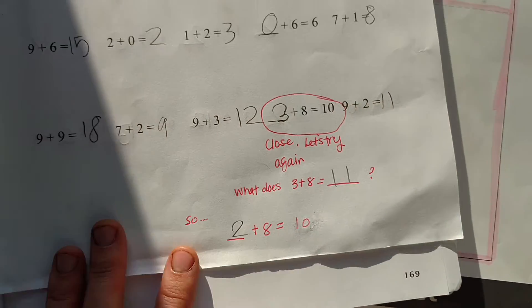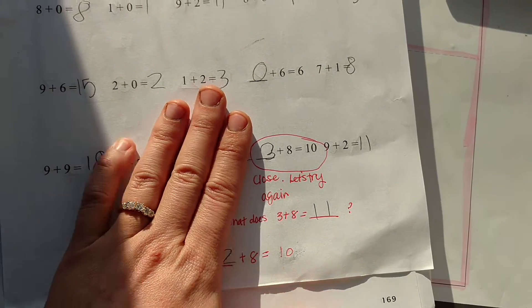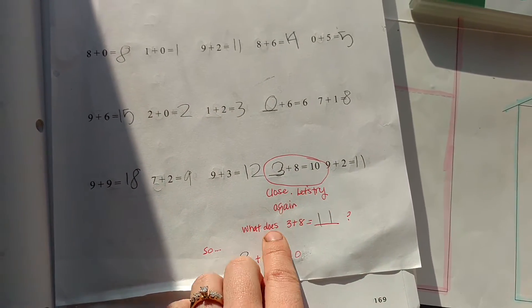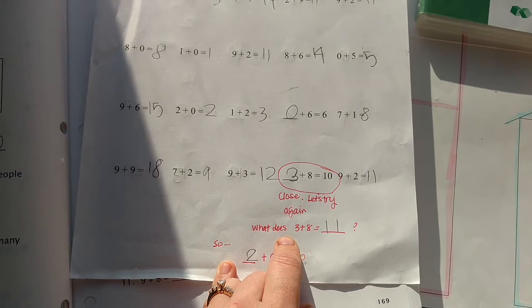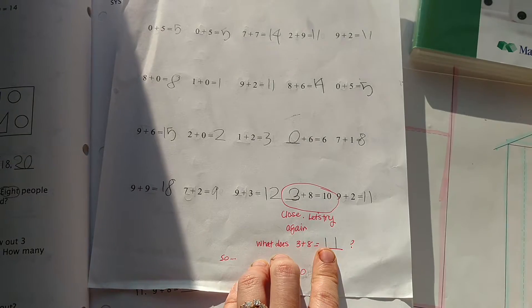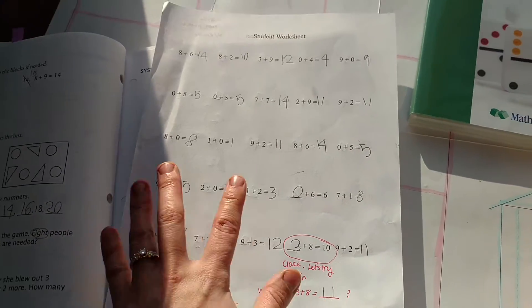When she has problems that are wrong, what I do, like they do solve for the unknown. This said what plus 8 equals 10 and she said 3. And so I'm trying to teach her how to check her work. So what does 3 plus 8 equal? And then to help her figure out the answer.